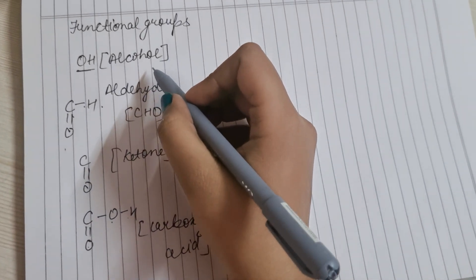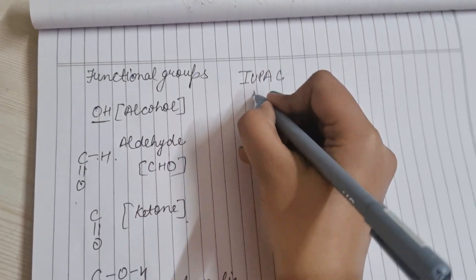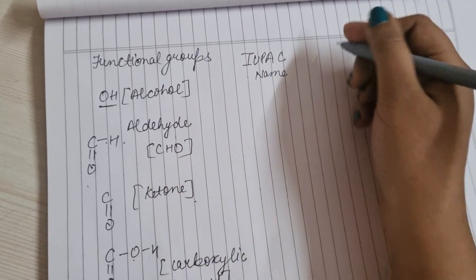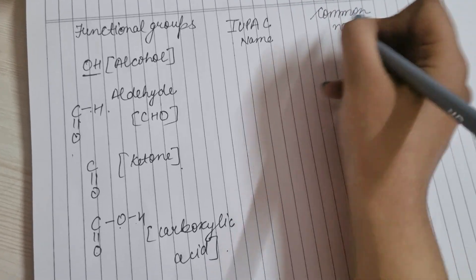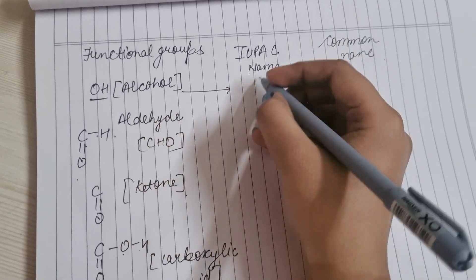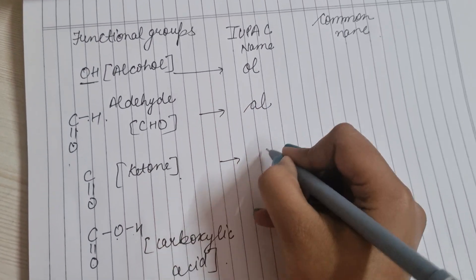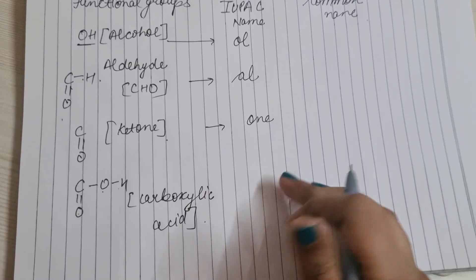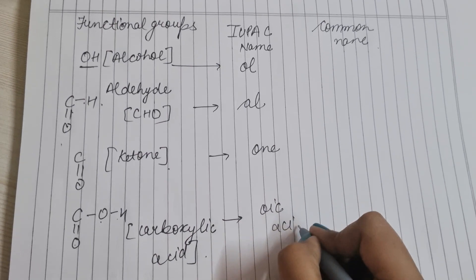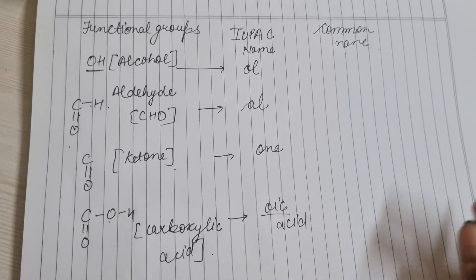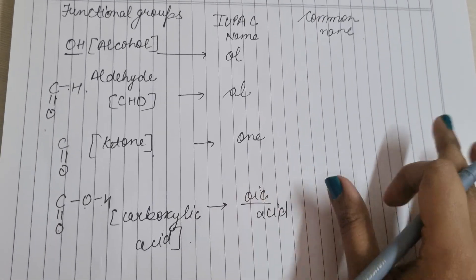अगर functional group alcohol है, तो IUPAC name के लिए पीछे 'ol' लगाएंगे। Aldehyde के लिए 'al', ketone के लिए 'one' (लिखते में o-n-e), and carboxylic acid के लिए 'oic acid' लगाता है। Students यह 'acid' लगाना मत भूलिएगा, वरना marks cut हो जाते हैं।